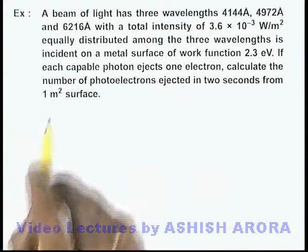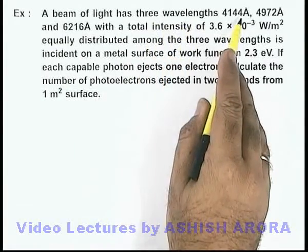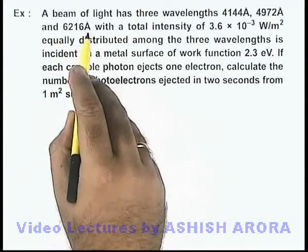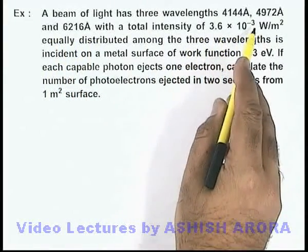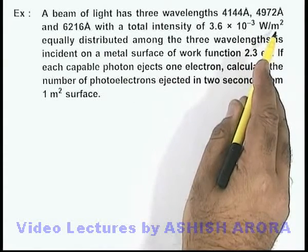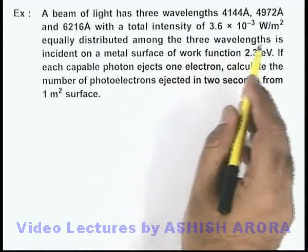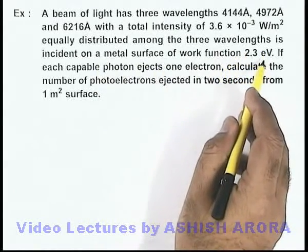In this example, we are given that a beam of light has three wavelengths: 4144 angstrom, 4972 angstrom, and 6216 angstrom with a total intensity of 3.6 × 10⁻³ W/m², equally distributed among the three wavelengths. This is incident on a metal having work function 2.3 eV.